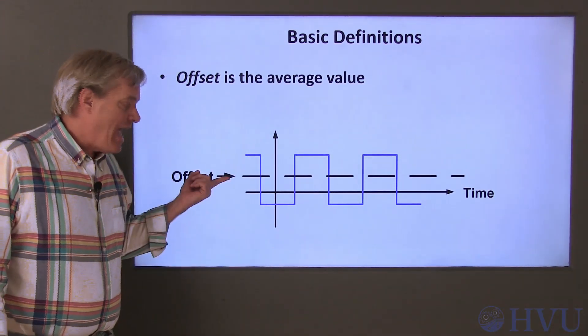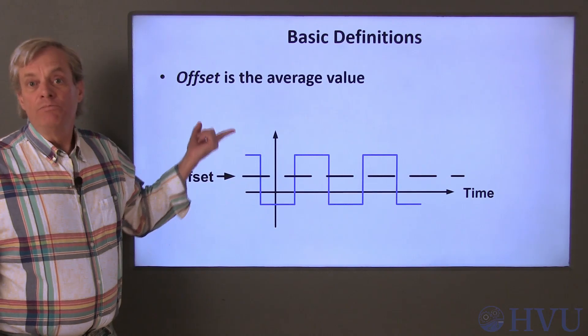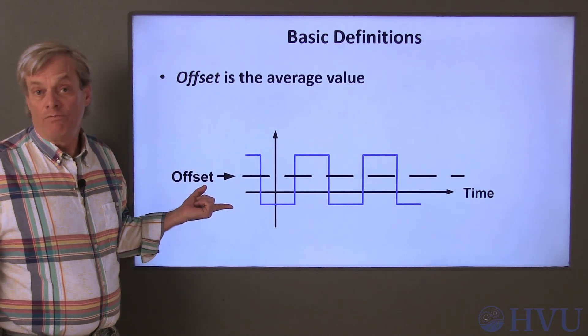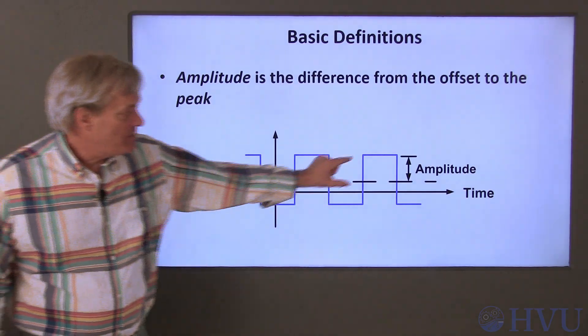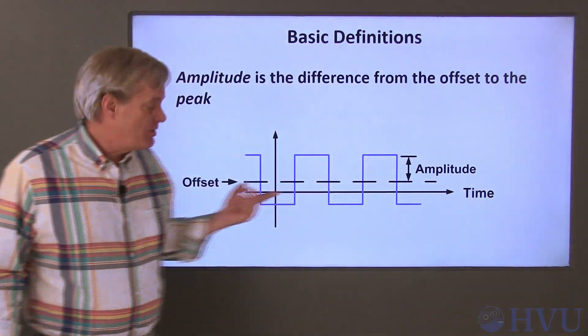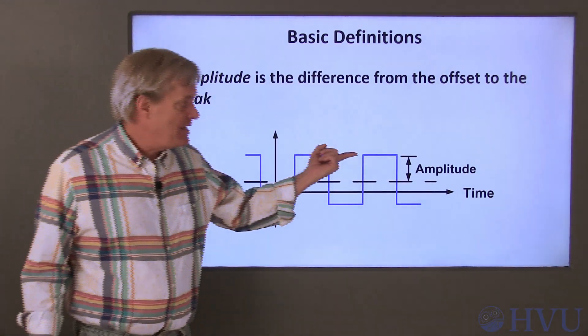The offset of a signal is its average value. It simply moves the entire signal up or down along the vertical axis. The amplitude of the signal is the vertical distance between the average value and the peak value.